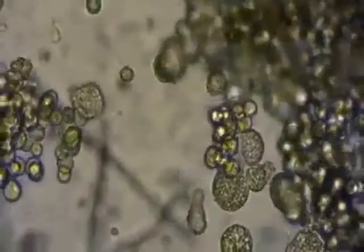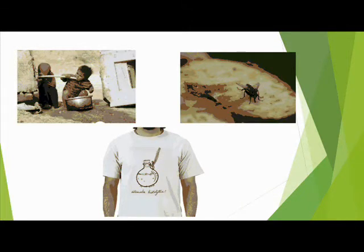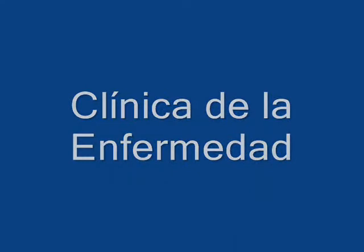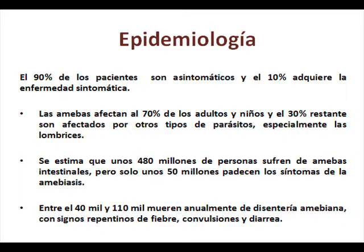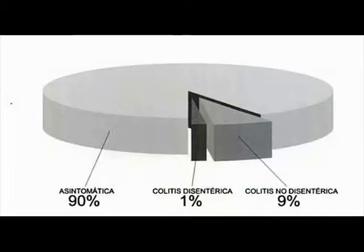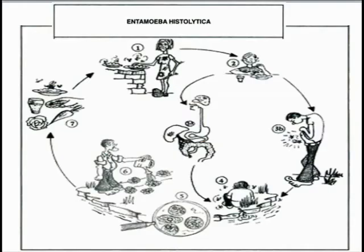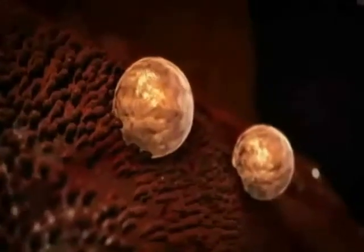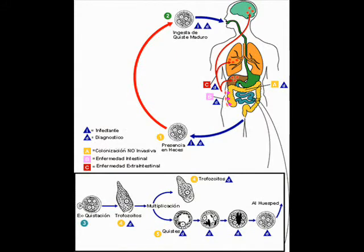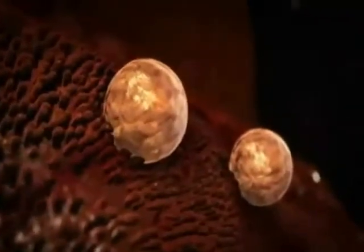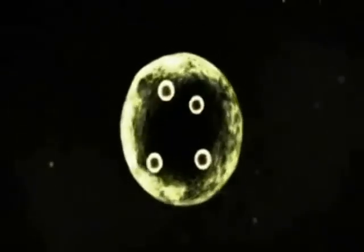Entamoeba histolytica is a parasitic amoeba that feeds on living cells in the human gut. This is an inflammation of the intestines that causes diarrhea, and in the worst case, severe dehydration. The amoeba starts its life cycle as a free-living cyst in the water.